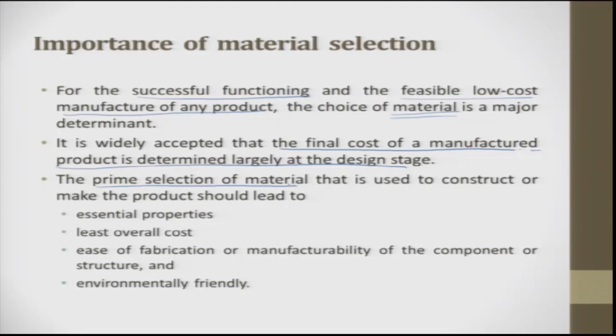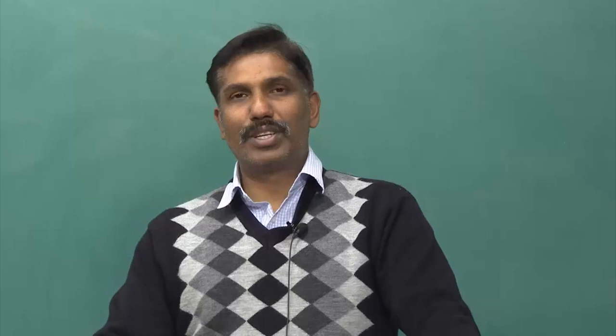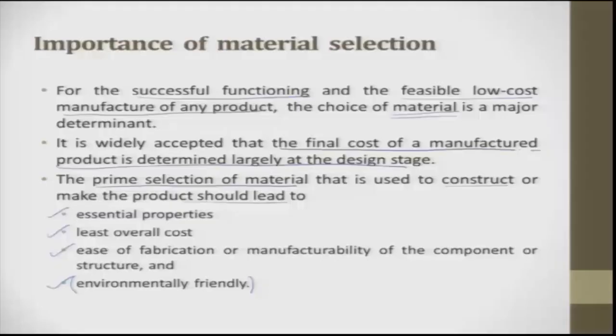The primary selection of material to construct a product should lead to essential properties, least overall cost, ease of fabrication, and environmental friendliness. Today we talk about sustainability in the product and sustainable materials — environmental friendliness is discussed in a big way. Plastic bags, for example, are slowly being removed or reprocessed. For selecting a material you should essentially know its properties, it should have the least cost, and ease in manufacturing.